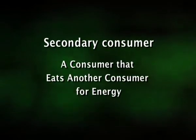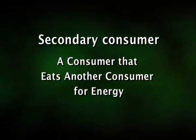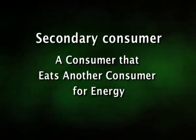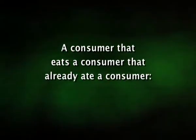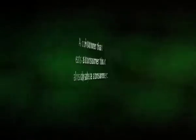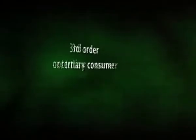This energy is available for another consumer. A consumer that eats another consumer for energy is called a secondary or second-order consumer — maybe a carnivore, omnivore, predator, or scavenger. Most of the energy the secondary consumer gets from the primary consumer is used by the secondary consumer, and some energy is lost as heat. But some energy is stored and can pass on to another consumer. A consumer that eats a consumer that already ate a consumer is called a third-order or tertiary consumer — maybe a carnivore, omnivore, or scavenger.